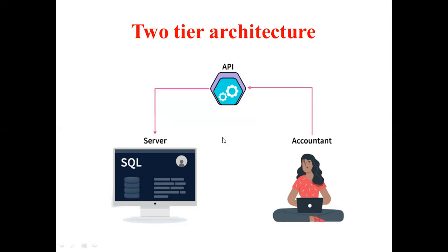Let's see one example of two-tier architecture. Consider a situation where you go to a bank to withdraw some cash. After entering the withdrawal amount and account details on the withdrawal slip, the banker accesses the server-side database via an API call and checks whether there is enough balance present or not. This client-server model is the example of two-tier architecture — the accountant fetches the information from the server through an API call.